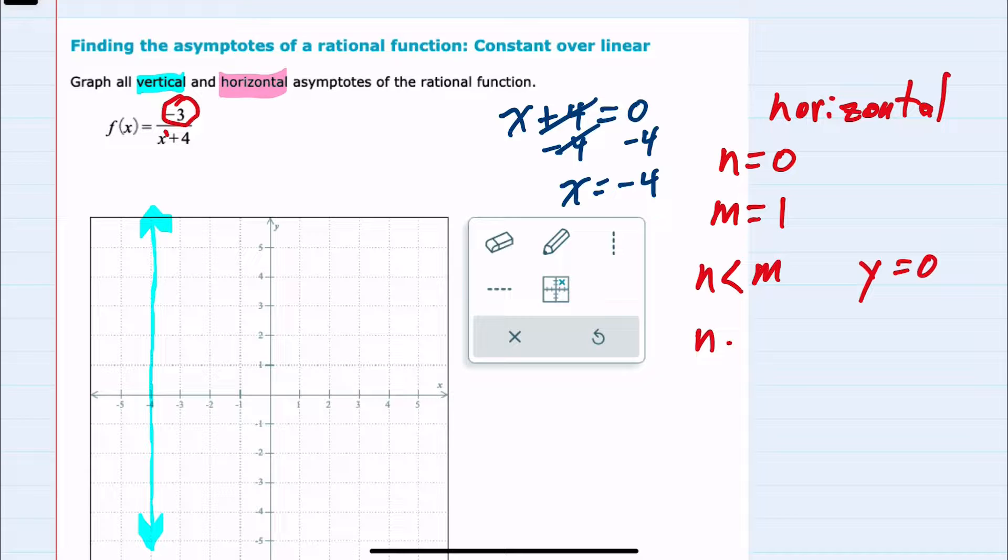If the degree of the top is equal to the degree of the bottom, then my asymptote is just going to be the leading coefficient of the numerator over the leading coefficient of the denominator.